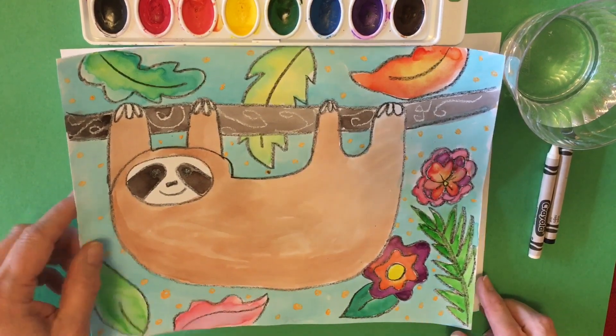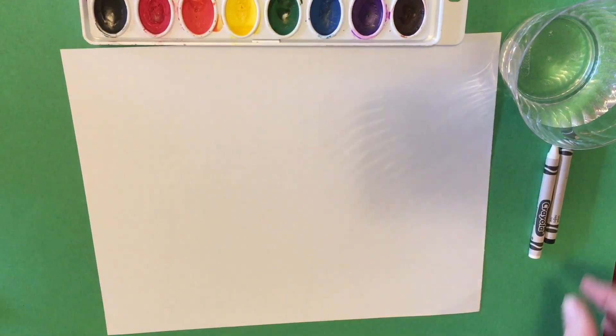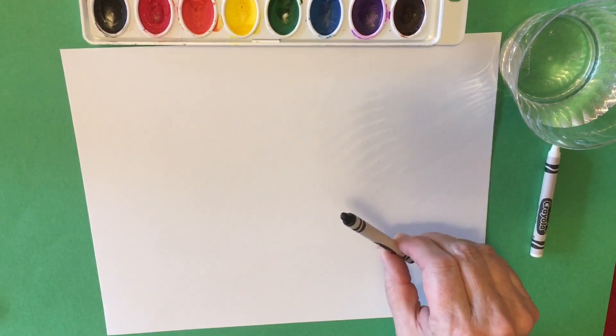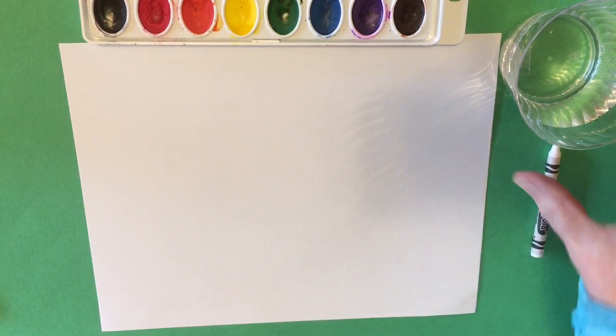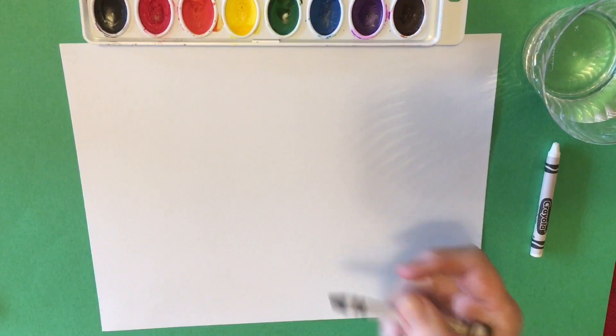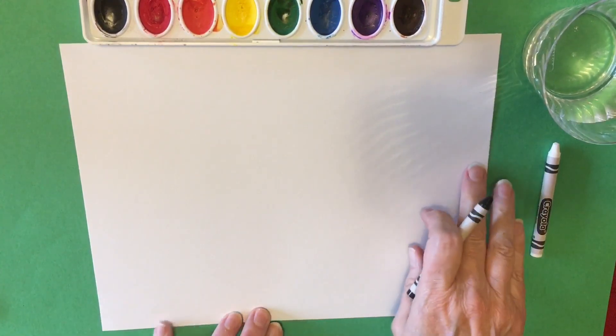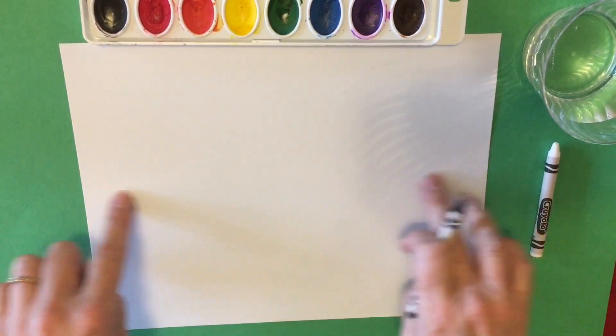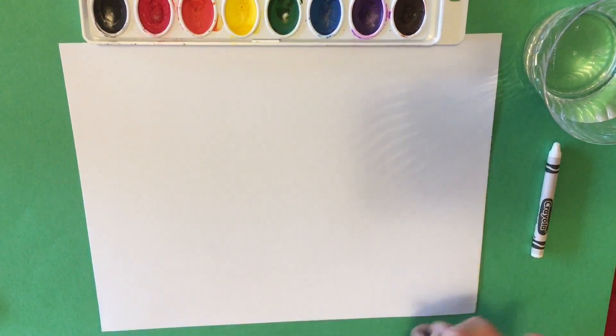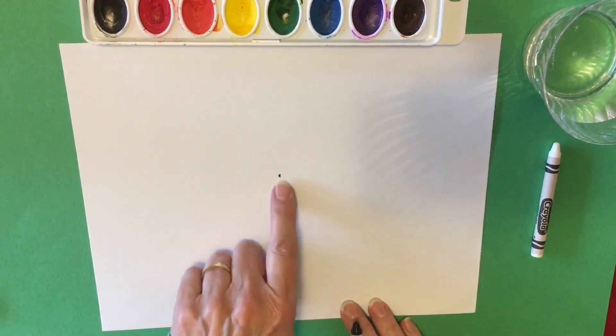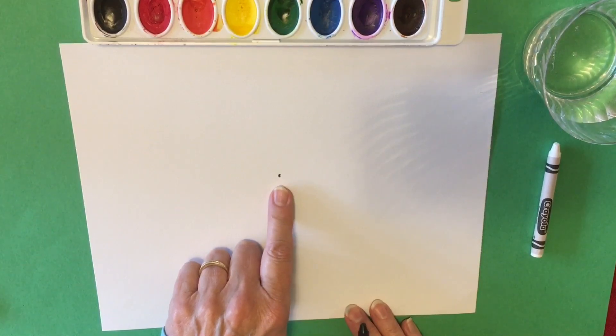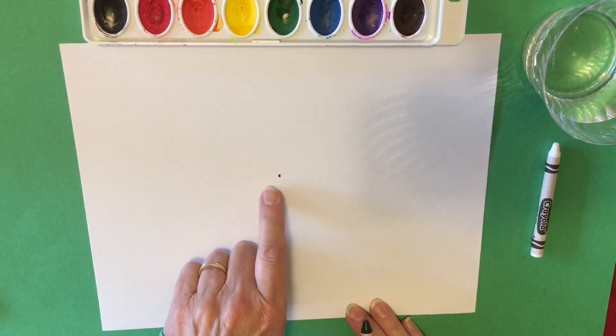So in order to start, you're going to need a black crayon which makes it super easy because everybody has one of those, I hope. Alright, the first thing we're going to do is find the center of the paper, so equal distance to this and this. You can eye it, it doesn't have to be exact, but put just a tiny little dot in the center of your paper and that should be a good way to start.